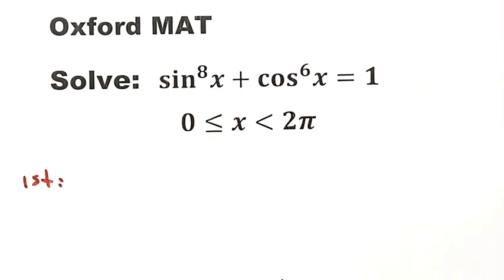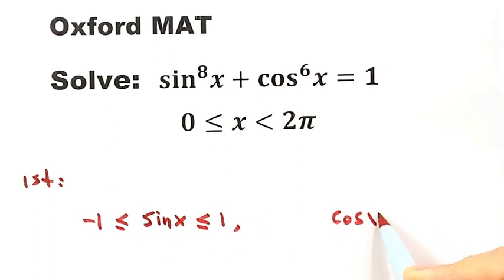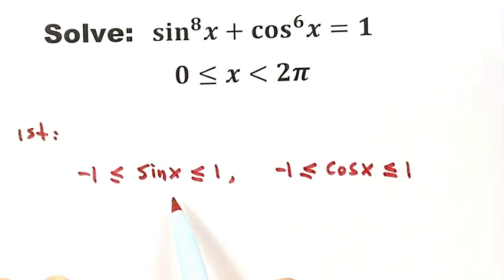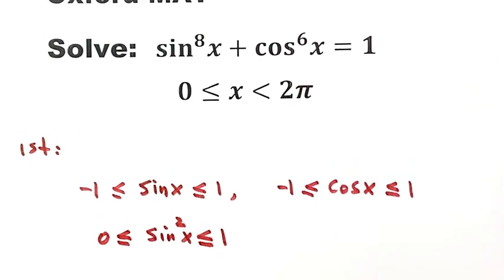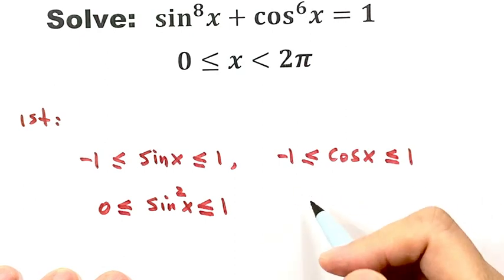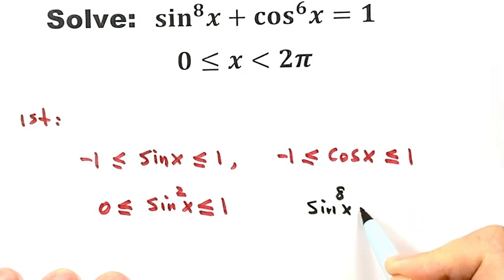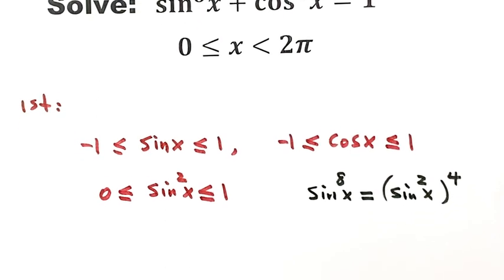We're going to begin with the range of sine x. Sine x is bigger than or equal to negative 1 and less than or equal to 1. Similarly, cosine x is also bigger than or equal to negative 1 and less than or equal to 1. Now sine x squared is bigger than or equal to 0 and less than or equal to 1. Because we have sine x to the power of 8, which equals sine x squared to the power of 4, we'll consider several cases based on sin²x.